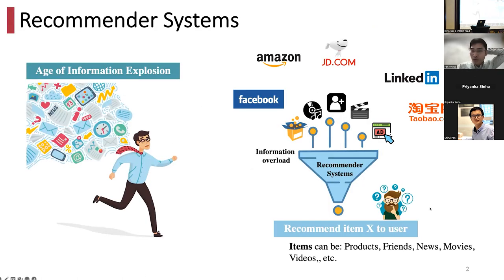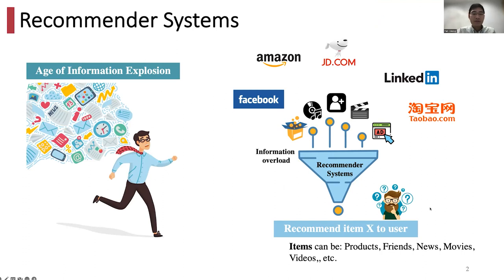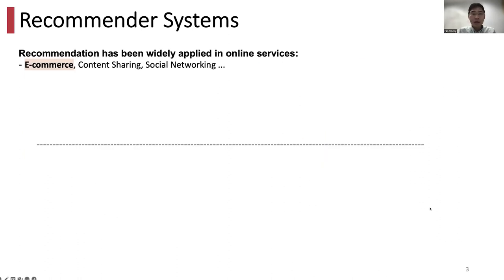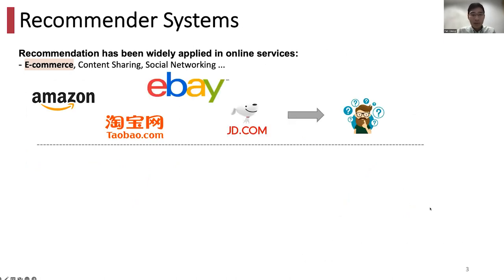First, I would like to briefly give an overview of recommender systems. What are recommender systems? Recommender systems are information filtering systems for addressing information overload problems. They try to filter and suggest relevant items to users based on their uniqueness and preferences from their historical behaviors. These items can be any products, friends, news, movies, and so on. Recommender systems have already occupied our daily life, especially in user-based online services like e-commerce and social media.